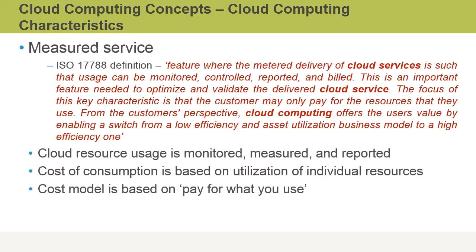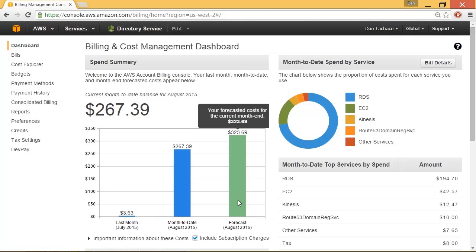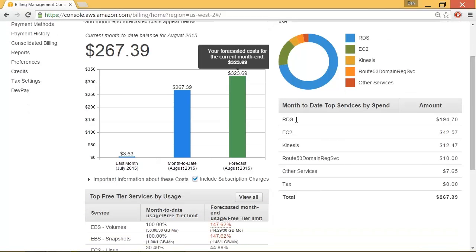The last characteristic is measured service. This means that cloud resource usage — whether it's virtual server instances that are running or storage in the cloud — all of this usage gets monitored by the cloud service provider, then reported. The cost of consumption is based on the utilization of those individual resources, so the cost model is based on pay for what you use. Many cloud providers will provide a web interface where at any point in time you can see how much your monthly bill is based on the cloud resources you've been using, along with a projected forecast and a breakdown of the specific cloud services that incurred those charges.